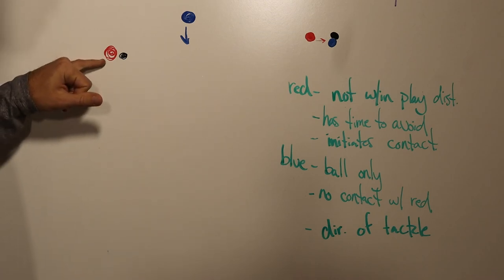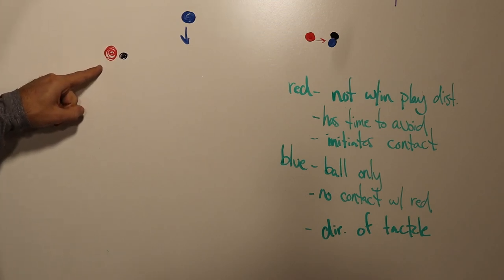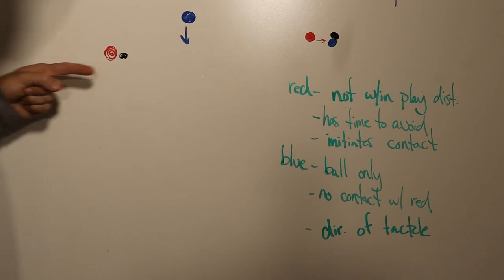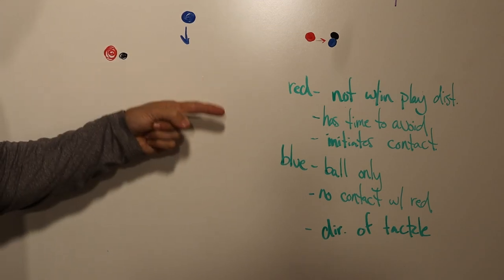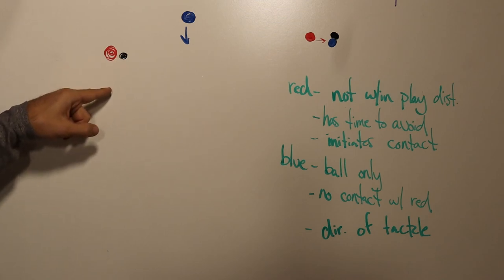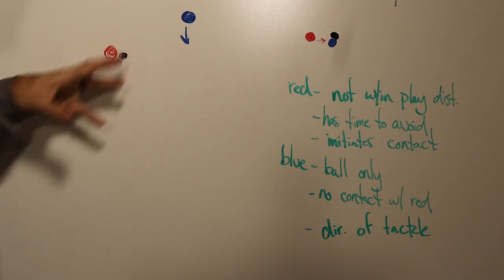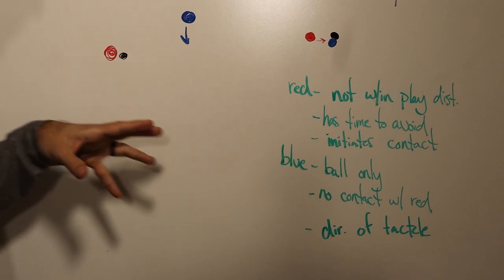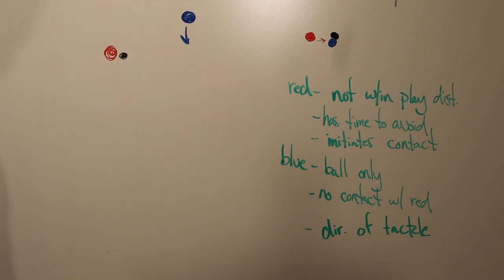let's pretend that red, symbolized by this red dot, has got the ball, which is this little black dot, and red is going this way. Now red's dribbling down the field and the ball is right on red's foot or the ball is within playing distance of red. So red can reach out his foot and keep on dribbling the ball down the field.